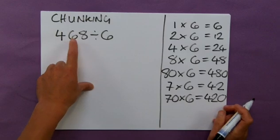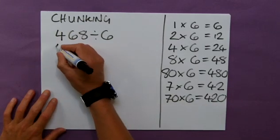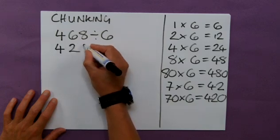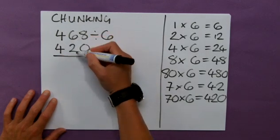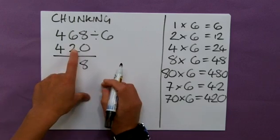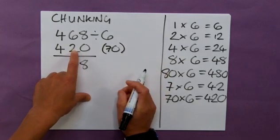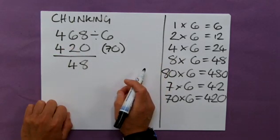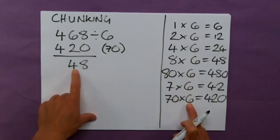So, what I'm going to do, I'm going to subtract 420 from 468. So, 420, using the counting on method in my head, is going to give me a remainder of 48. Now, I know that that represents 70 lots of 6. That's a chunk of 70 sixes. I can use this times table again to have a look. Can I find a 48 in it?